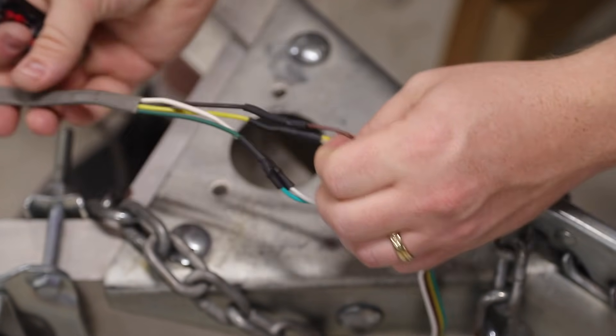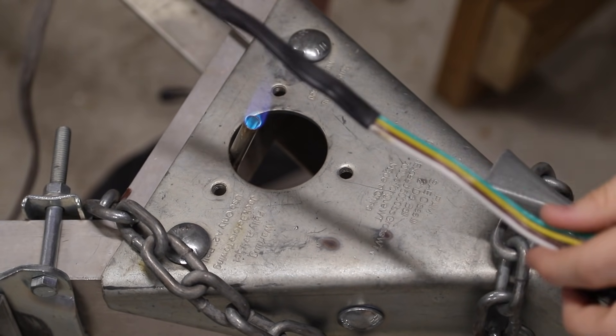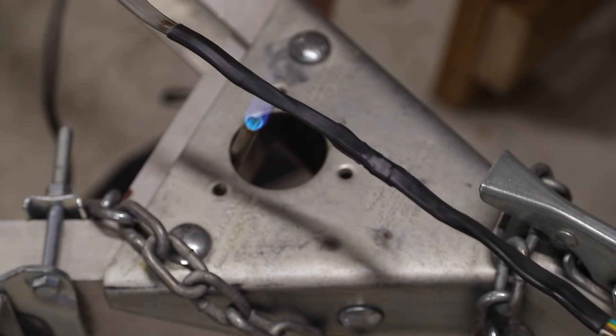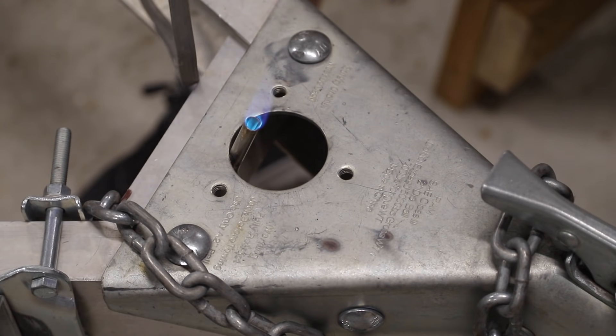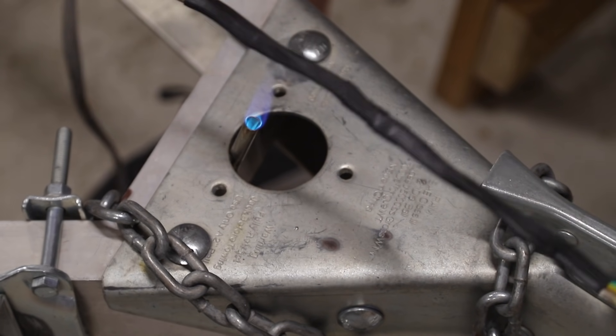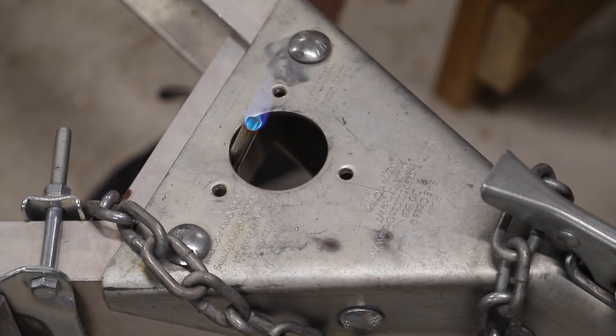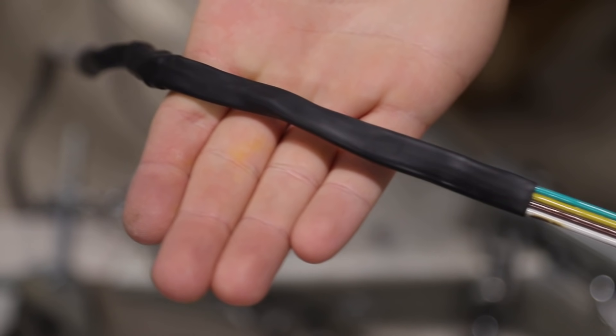After each individual strand has been carefully insulated, the next thing is to slide down the larger piece of heat shrink that's going to protect the entire bundle of wiring. Now since this is such a large piece of heat shrink and I was a little pressed for time, I decided to use a blowtorch to apply the heat rather than the lighter. And the blowtorch made quick work of this, and as soon as everything cooled off it was ready to go test.